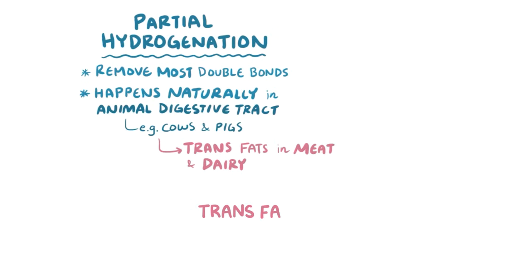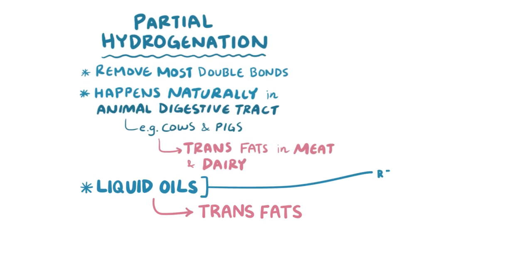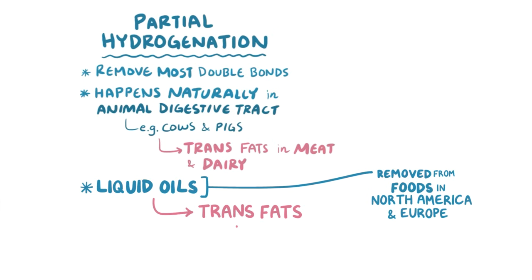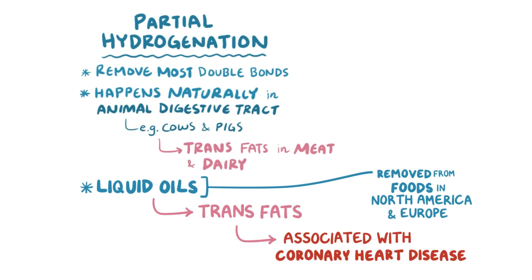Trans fats are also created through the partial hydrogenation of liquid oils, a process that makes them solid. Partially hydrogenated oils have been largely removed from foods in North America and Europe because trans fats have been associated with coronary heart disease.